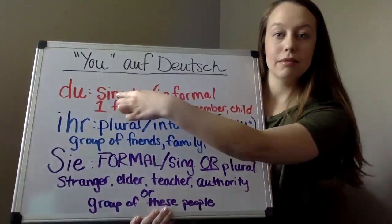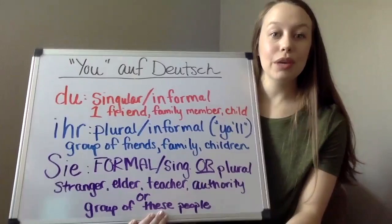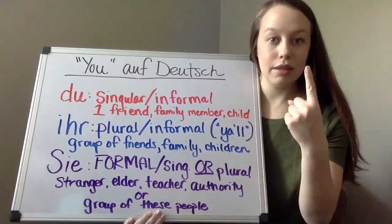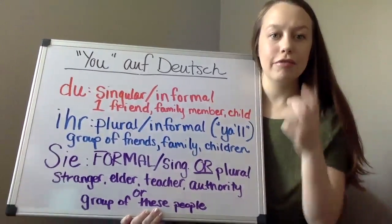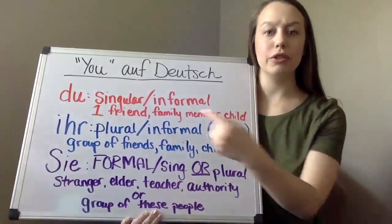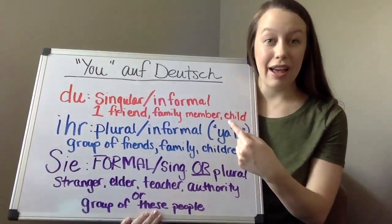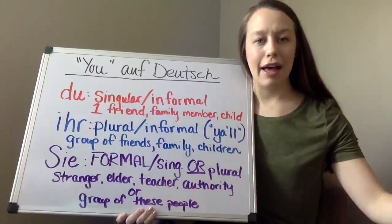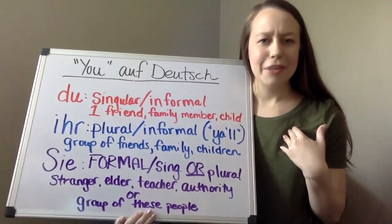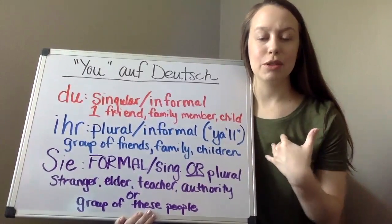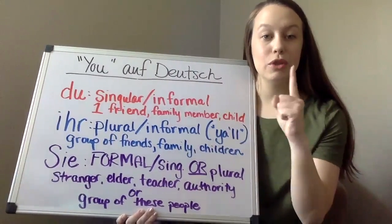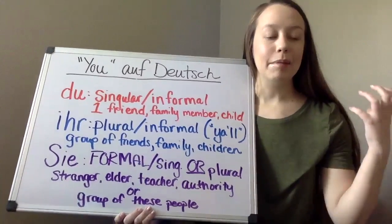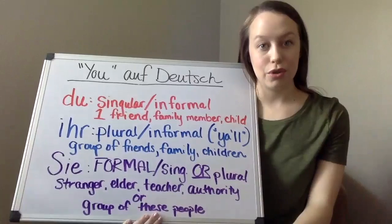So the first one is 'du.' We're going to use 'du' whenever it's singular — so the person we're talking to is one person — and also when it's an informal situation. I normally wouldn't talk to a friend, a family member, or a child formally. We have a relationship, and with a child they have no authority over you, so it's informal as well. 'Du' is singular and informal: friends, family, and children.